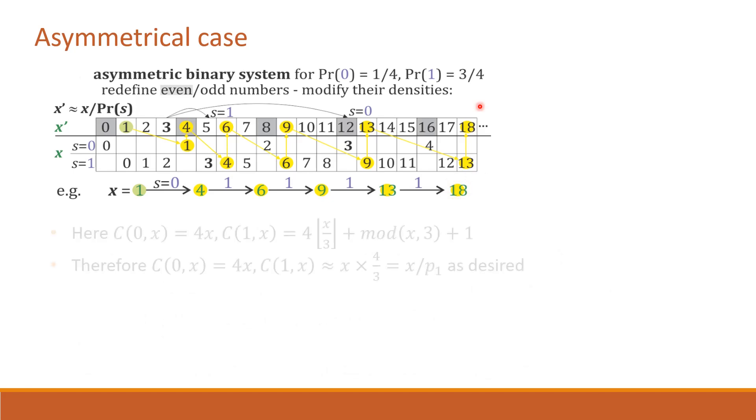Let's try to define the coding function in this particular case. For coding s equal to 0, we can see 1 is coded to 4, 2 is coded to 8, 3 to 12 and so on. So it is pretty obvious that C(0,x) is 4x.